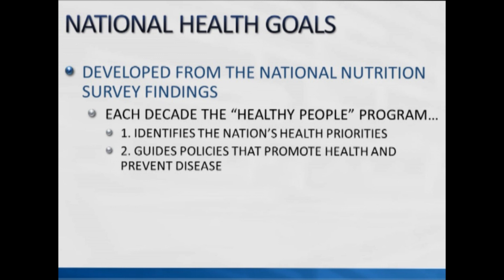These surveys, notably NHANES, provide enough information for national health goals to be established. Each decade, for instance, the Healthy People program is basically established for the population — it identifies the nation's health priorities and guides policies that promote health and prevent disease. All the information gathered from NHANES and other surveys provides the relevant information for the formulation of the Healthy People report. We have Healthy People 2010, Healthy People 2020, and the next one we're now looking at is Healthy People 2030.